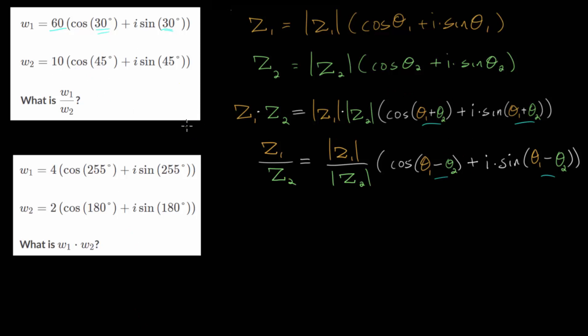For this top one, we are using division. We have W1 over W2. We will divide the magnitudes: 60 divided by 10. And we will subtract the angles. So we have the cosine of 30 minus 45, which would be negative 15 degrees, and I multiplied by the sine of that same angle, minus 15 degrees.